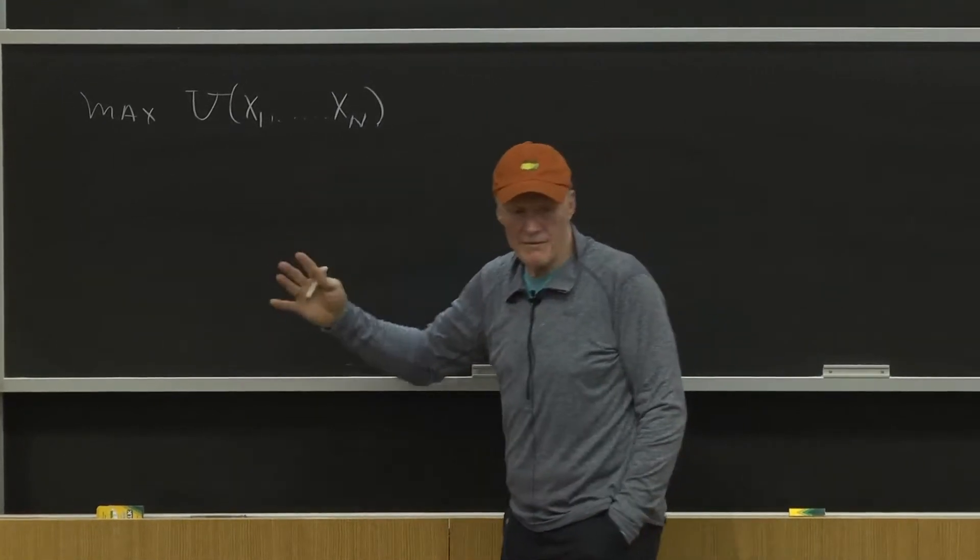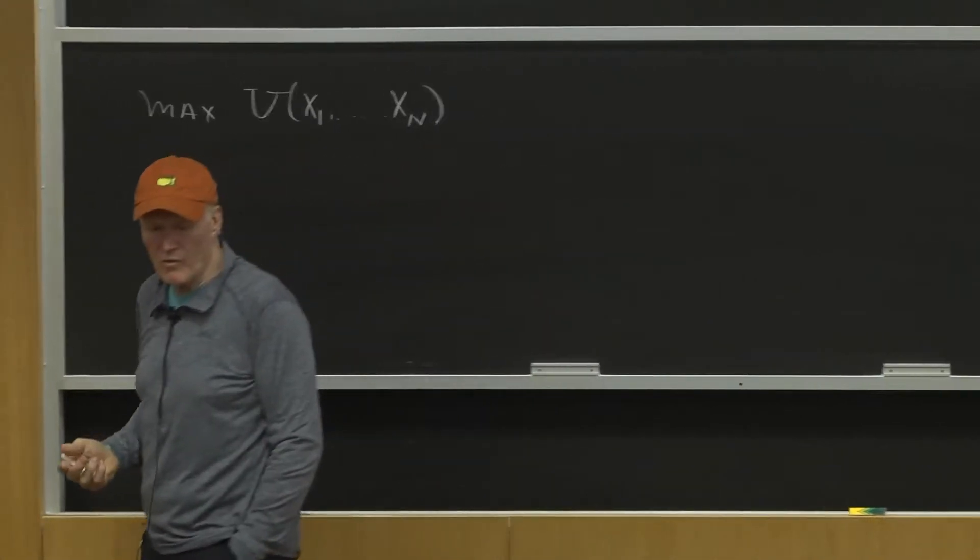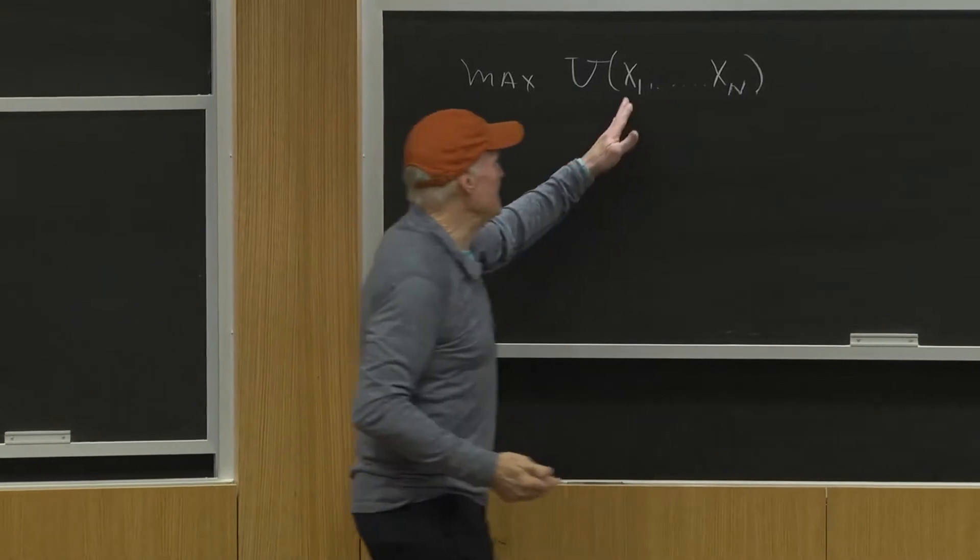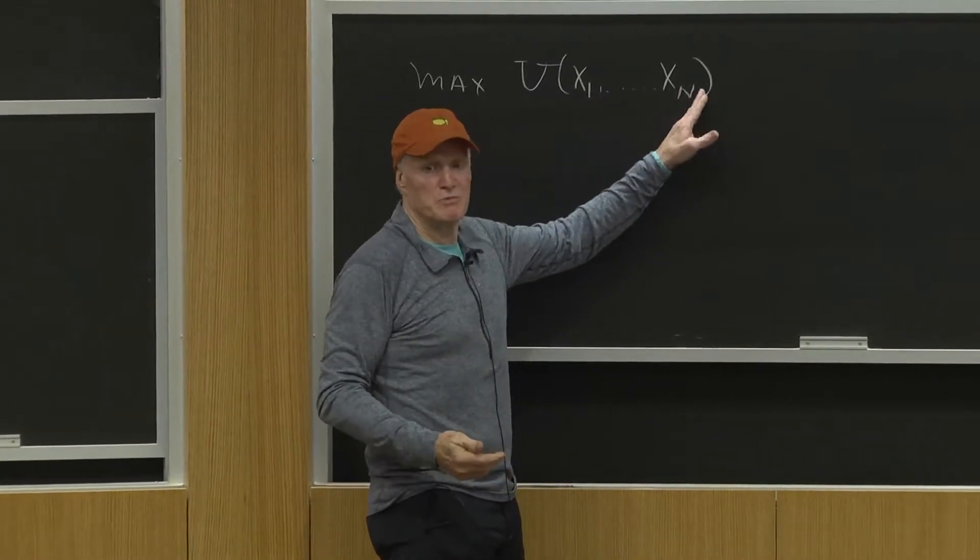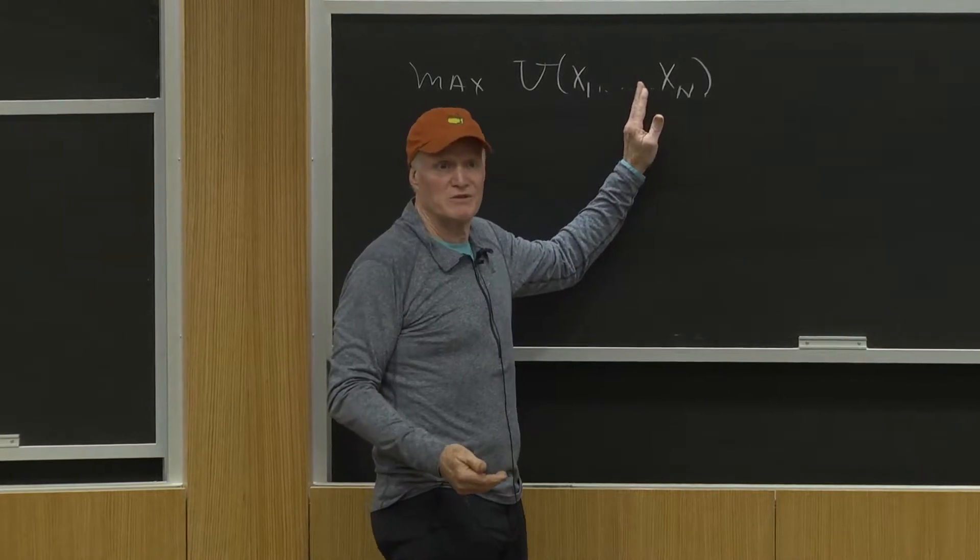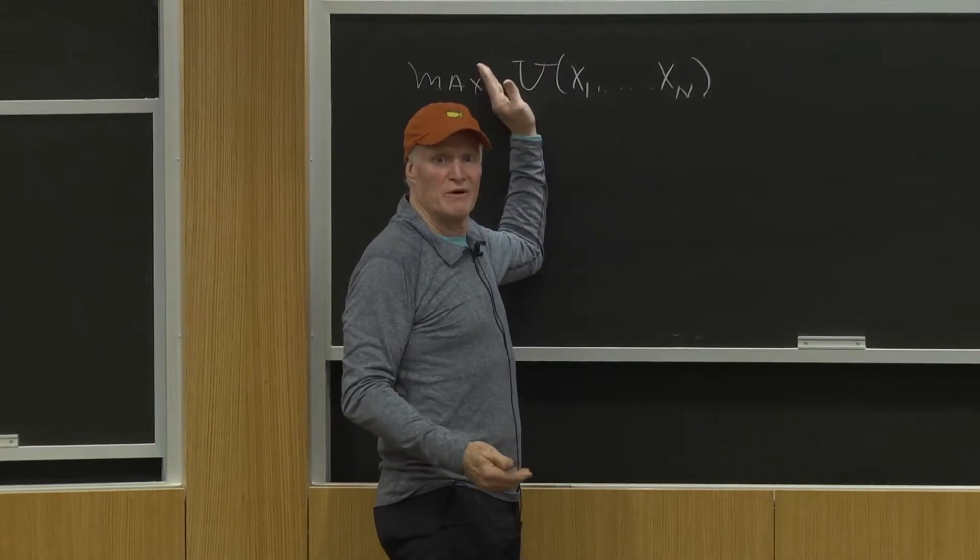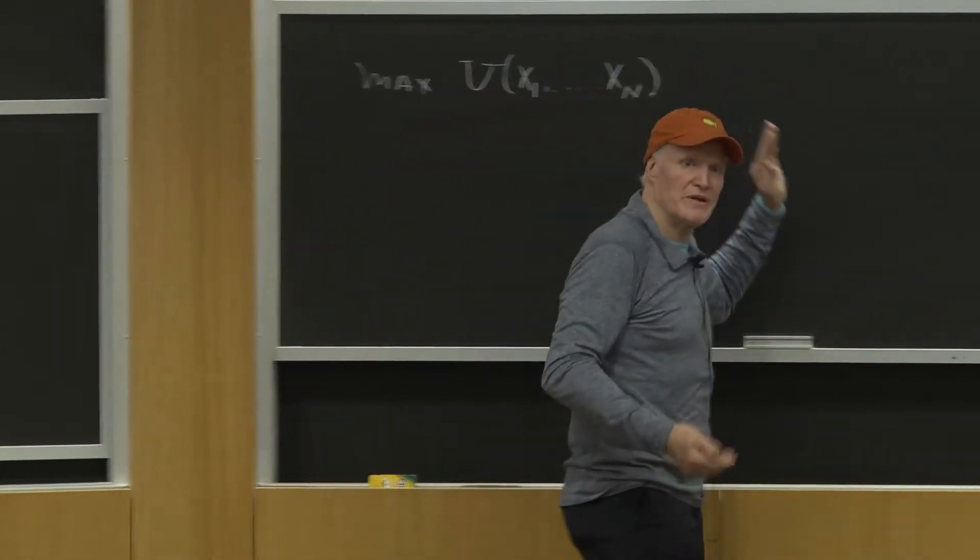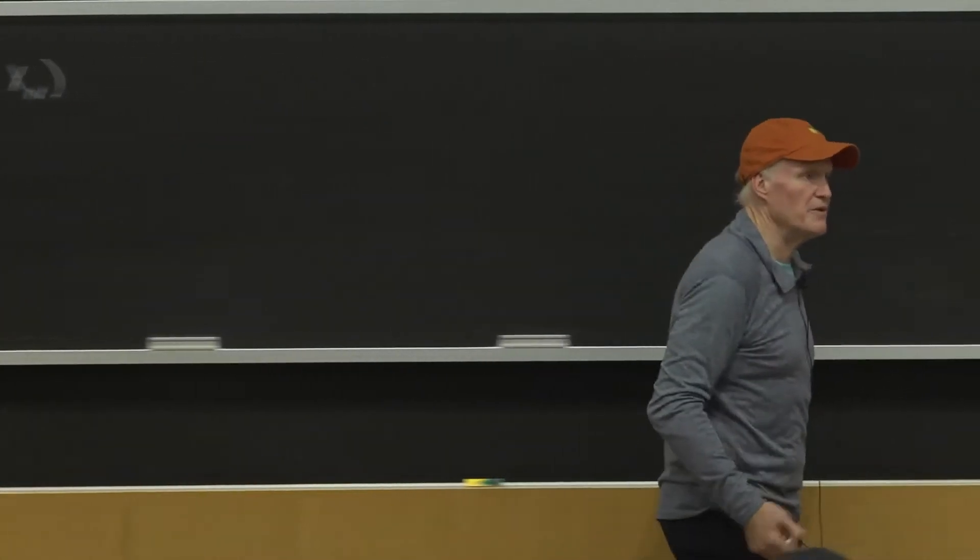We'll contrast that with what we'll talk about later in the quarter, which is a production function. For example, these might be the inputs you use to produce corn, but the big virtue in the corn case is you actually get to see the corn. You get to see what's being produced, whereas here we just have this thing called utility that we don't see.